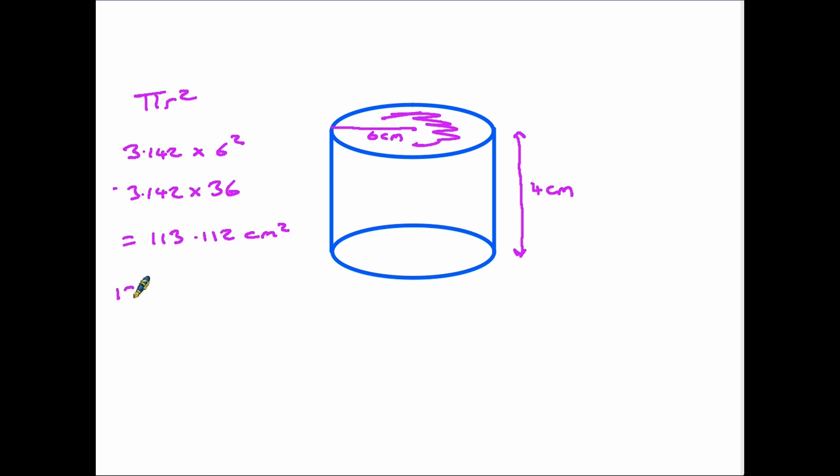All we need to do is take that measurement, 113.112, and multiply it by the height. In the previous situation it was the length because the cylinder was on its side, but it's the same measurement. It's the length of the cylinder, and it is 4. So we end up with 452.448 as the volume. Because it is volume, it's centimeters cubed.